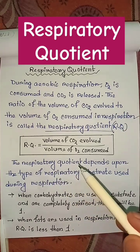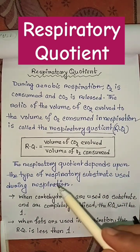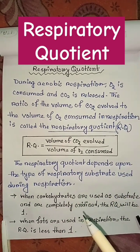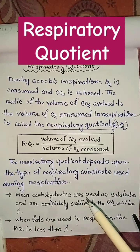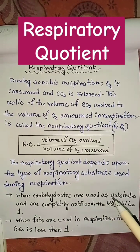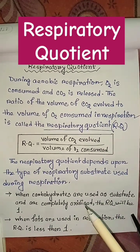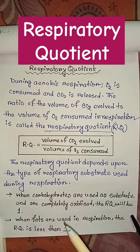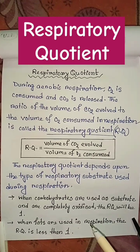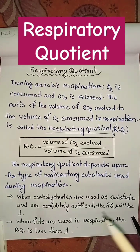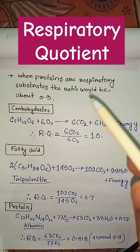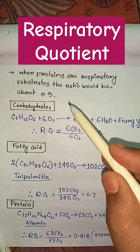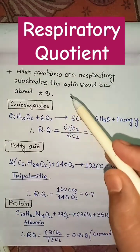The respiratory quotient depends upon the type of respiratory substrate used during respiration. When carbohydrates are used as substrate and are completely oxidized, the RQ will be 1. When fats are used in respiration, the RQ is less than 1. When proteins are the respiratory substrate, the ratio would be about 0.9.